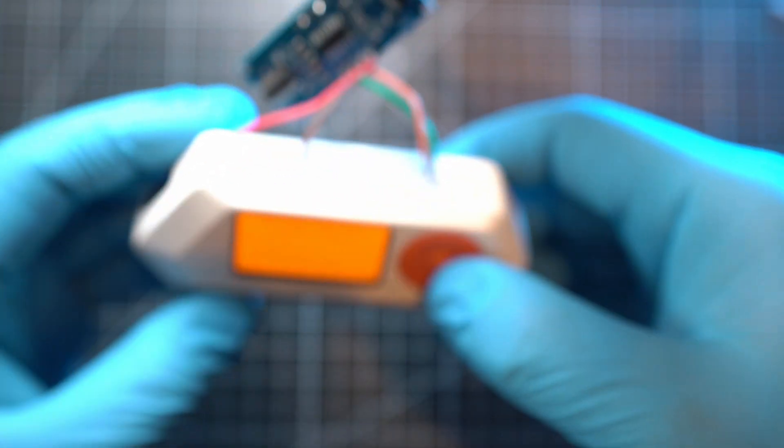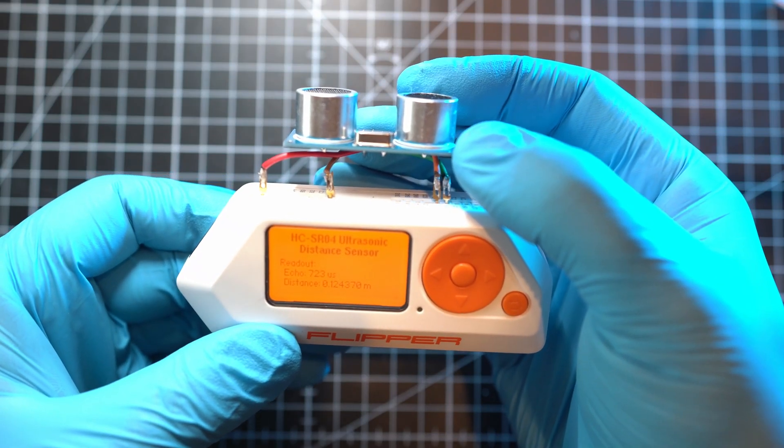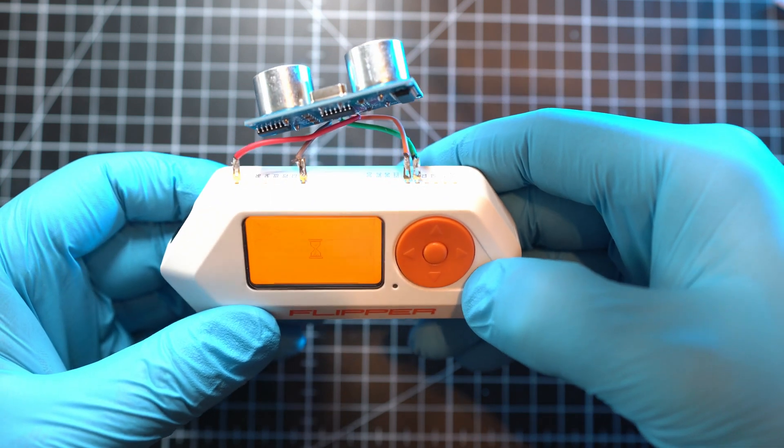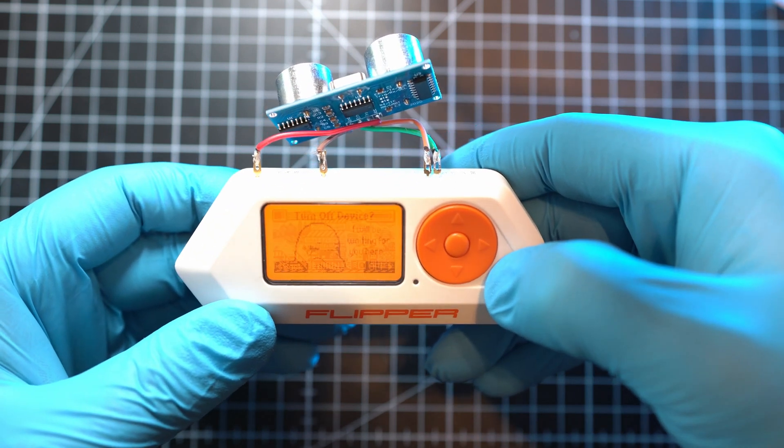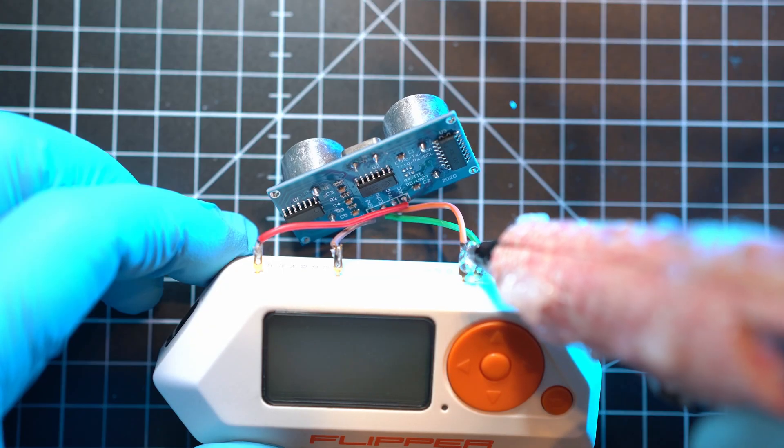So I will use a ton of hot glue to keep the module on top of the flipper. But again for safety I will turn it off and start hot gluing.